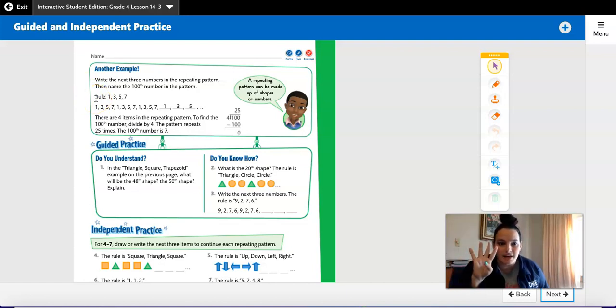You have 4 numbers in this pattern. So if you keep repeating it, 1, 3, 5 will be the next 3. There are 4 items in the repeating pattern. To find the 100th number, do 100 divided by 4.